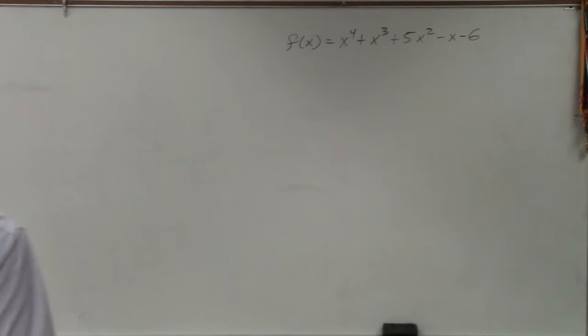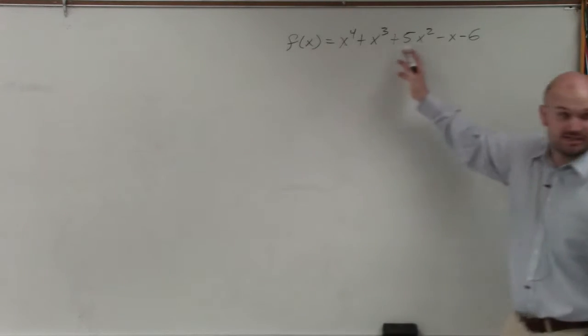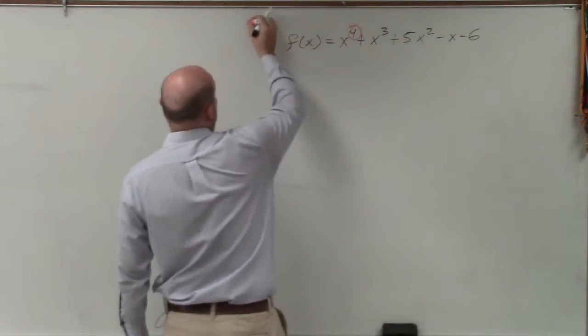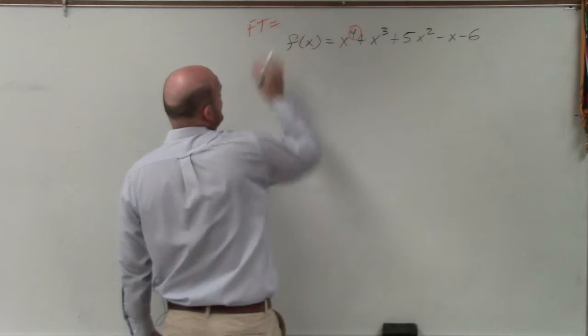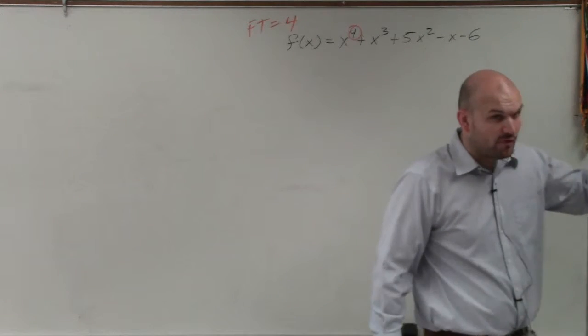So first thing that should automatically come into your brain when you hear find all the zeros is to go back, make sure it's in ascending order, and then you could say, all right, the fundamental theorem of algebra says there's going to be how many zeros? Four, right? OK, very good. So I know there's going to be four zeros.